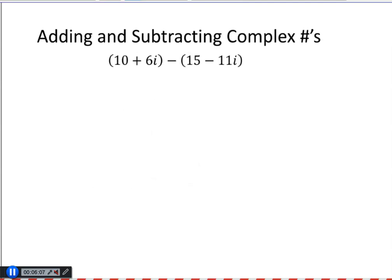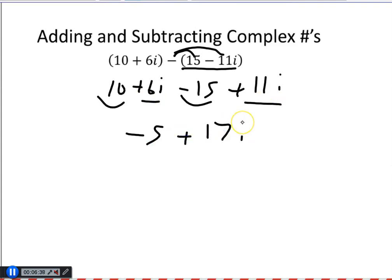Now, just like before, this is subtracting the second parentheses. So, we're going to distribute the negative. And that's going to give us 10 plus 6i. We really don't need those parentheses. And once we distribute, that will be minus 15 plus 11i because the negative 11i becomes positive. And now we're just joining like terms. 10 minus 15 is negative 5. 6i plus 11i, same as 6x plus 11x, is 17i.